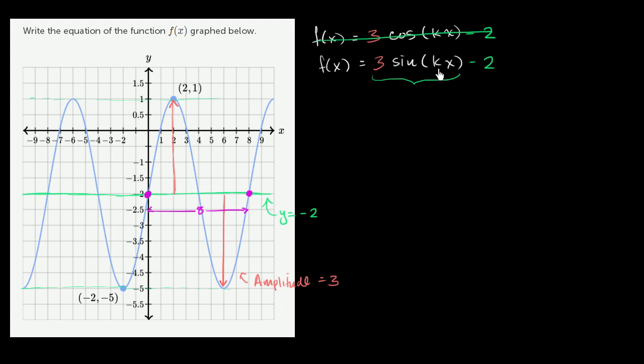So what coefficient could we have here to make the period of this thing be equal to 8? Well, let's just remind ourselves what the period of sine of x is. So the period of sine of x, I'll write period right over here, is 2π. 2π, you increase your angle by 2π radians or decrease it. You're back at the same point on the unit circle.